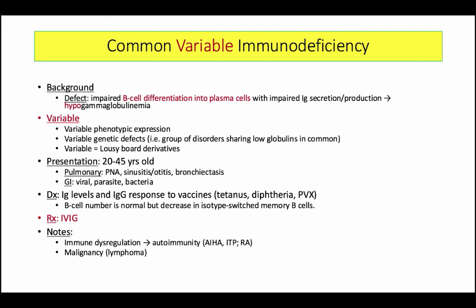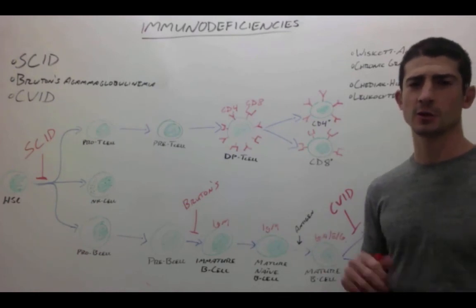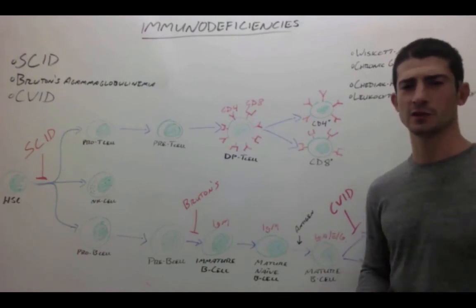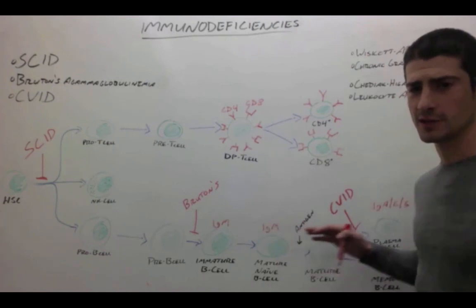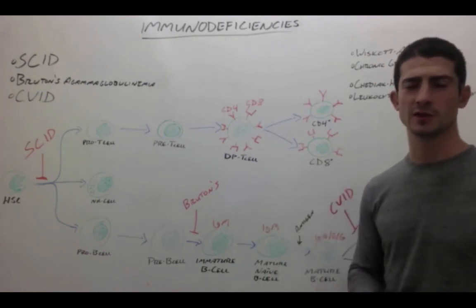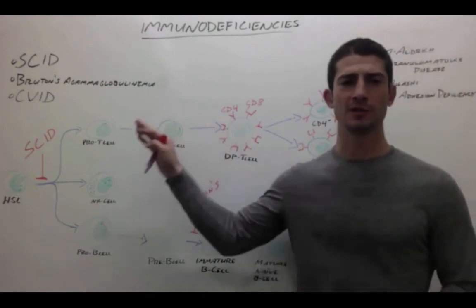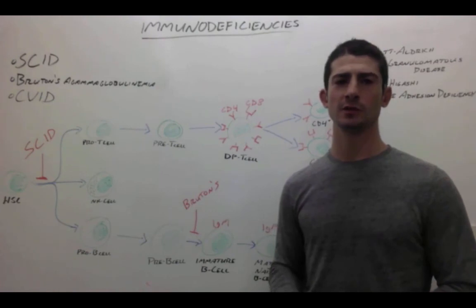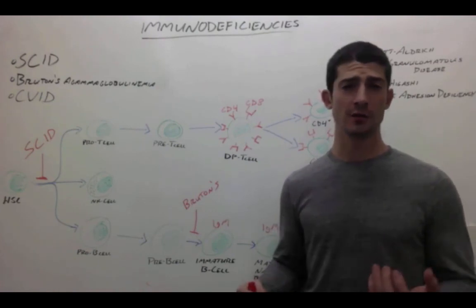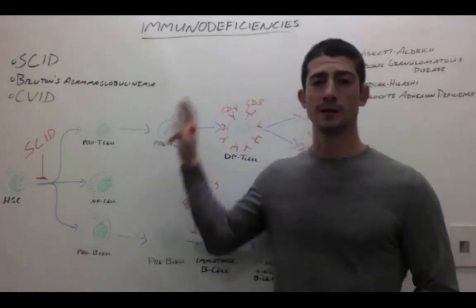John will finish the lymphocyte predominant immunodeficiencies with a quick review of treatment. For each of these, the immune systems are severely compromised, so you don't want to give any live vaccines to any of these patients. Because you have decreased levels of circulating immunoglobulins, you want to supplement their immune system with IVIG every four weeks or so. For severe combined immunodeficiency, you also want to do a bone marrow transplant — you don't have to worry about rejection because they have no circulating lymphocytes.